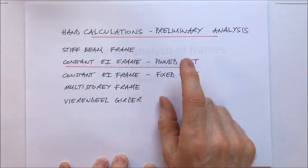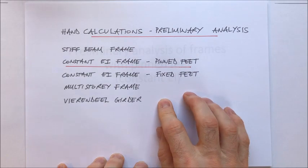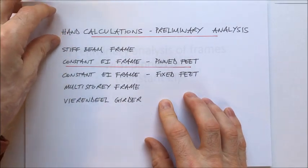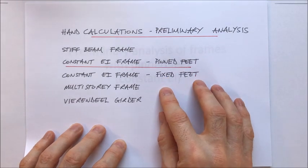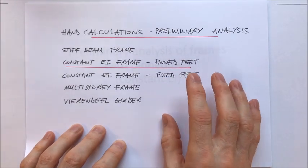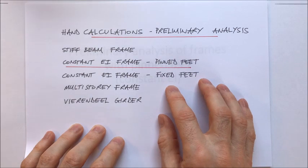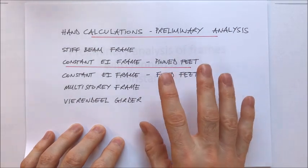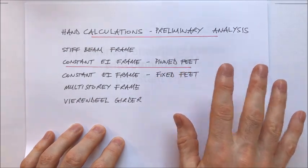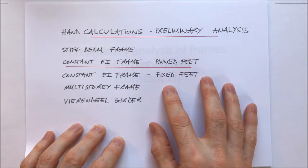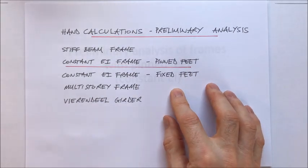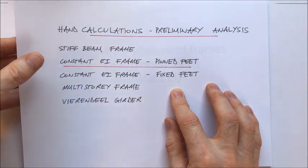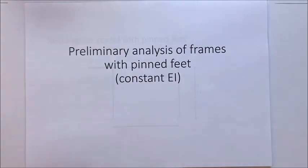We have some assumptions — or limitations — with our model. The model we're going to run through here is not going to be correct; it's going to be wrong. However, George Box, a famous statistician, said all models are wrong, some are useful. So although this model is wrong and we're only going to get approximate values, it's still going to be useful. We're going to calculate reactions.